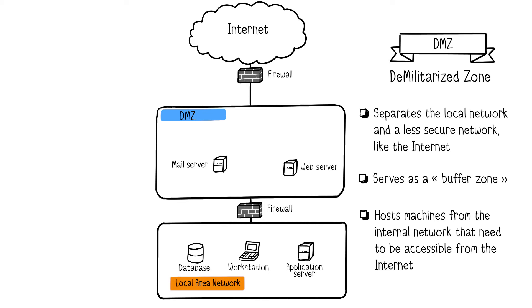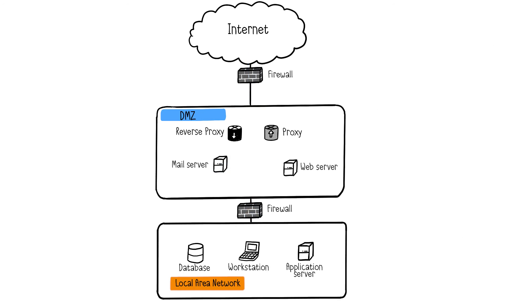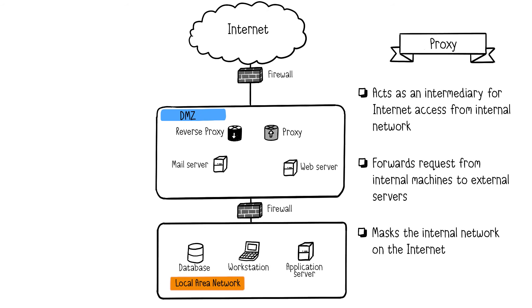In this analogy, the second firewall is another portcullis that protects the royal court, serving as a buffer zone between the hostile unknown lands and the royal court. Internal servers are never directly exposed to the internet — everything must first pass through the DMZ. This also means that in case of compromise of a service in the DMZ, the hacker will only have access to DMZ machines and not the local network.